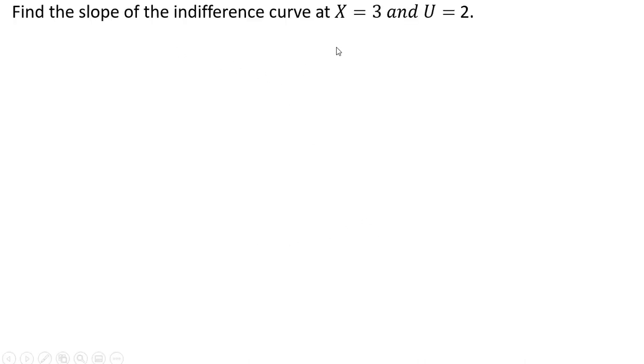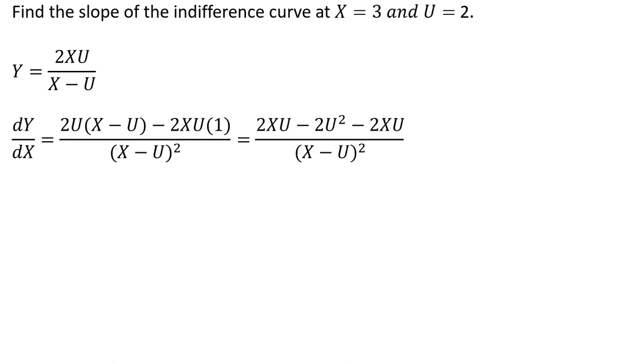Now let's find the slope of the indifference curve. So we take our indifference curve equation and we're going to take the derivative of it. The derivative is the slope. So I'm going to use the quotient rule here. Simplifying this up a little bit. And simplifying further.